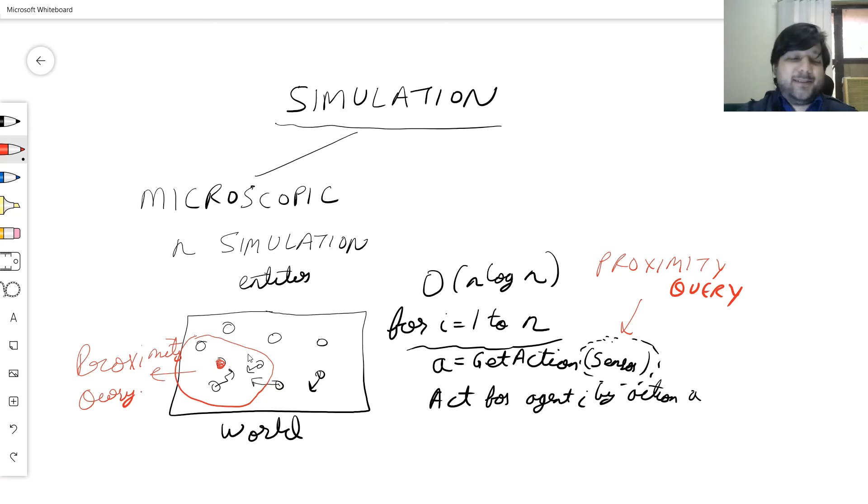Guess what, there is a data structure that we do not discuss in this course called the KD tree, where proximity queries, under some assumptions like all the entities are small, could be done in logarithmic time by this wonderful data structure called the KD tree. That's what exactly happens in this simulation. You click on the world, simulate, and you see all the entities behaving as per the natural order around over here and acting in this beautiful world in a microscopic simulation framework.